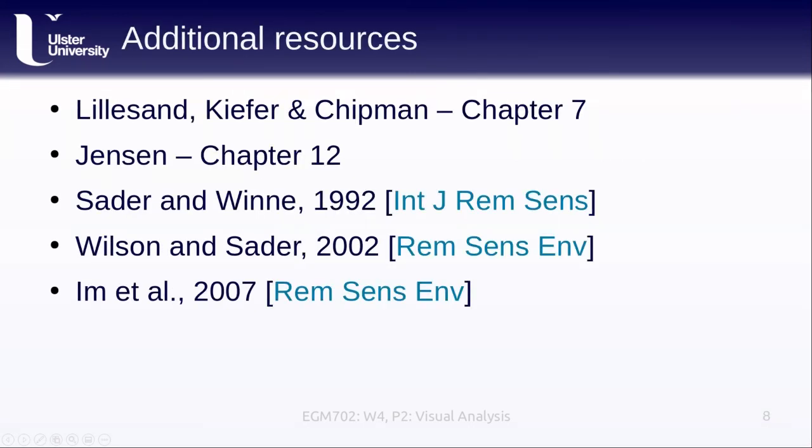We have a few additional resources for this lesson. You can read more about this in Lillesand, Kiefer and Chipman, Chapter 7, or especially in Jensen, Chapter 12. There's two papers here, one from Sader and Winne and one from Wilson and Sader in 1992 and 2002, that look at using the multi-temporal false color composites in order to do change analysis. And a paper from Im et al that looks at actually picking thresholds for analyzing binary changes where we have change or no change.